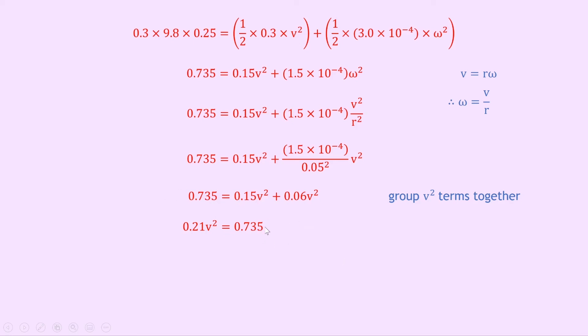So dividing this side now by 0.21, we get v squared equals 3.5, and now square rooting that 3.5 to get v on its own, we have v equals 1.9 meters per second. So that's the linear velocity of the ball at the bottom of the slope.